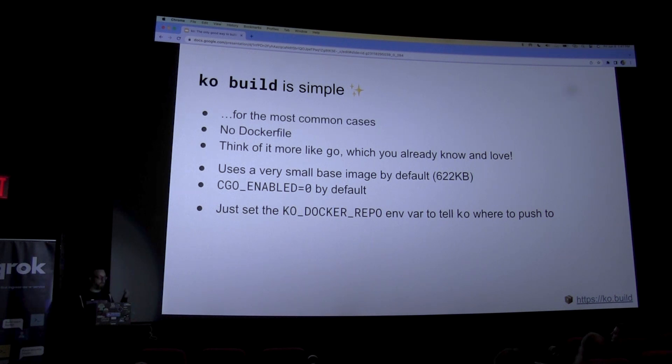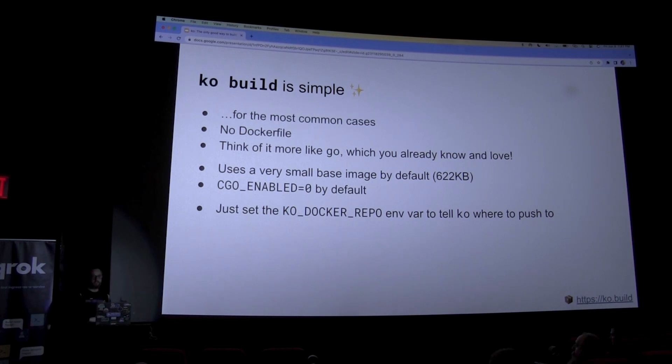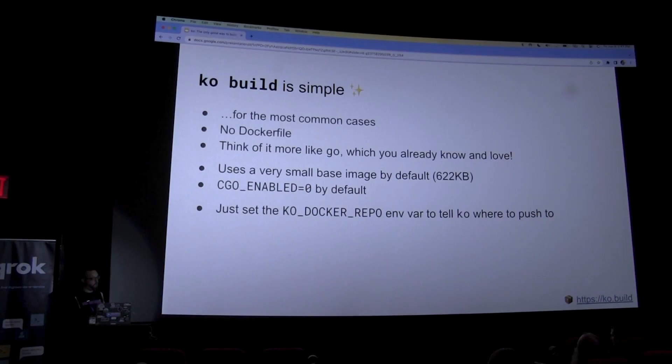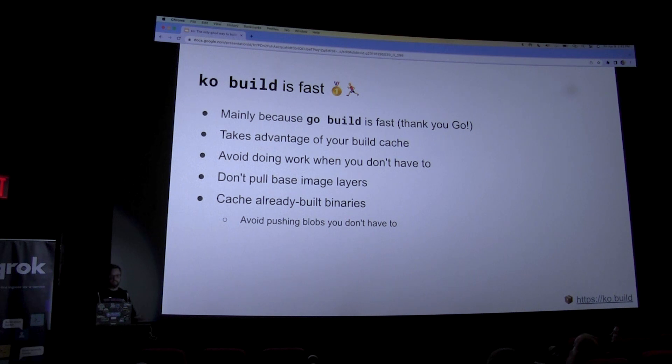The goal is that Ko is simple for most common cases. If you can use that Dockerfile from Docker's official website, you should be able to use Ko and get rid of the Dockerfile. Go spends a lot of time, effort, and care on polishing the developer experience — there's this beautiful simple go tool — and then we wrap it in 300 lines of Dockerfiles and ship it to prod. Ko tries to extend that simplification to building the container image you deploy to prod. Think of it more like go, which you already know. It uses a very small image with nothing in there that doesn't need to be there. You just need to set KO_DOCKER_REPO as an environment variable to say where to push. Ko build is fast mainly because go build is fast.